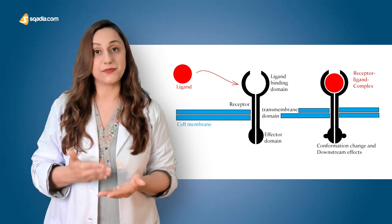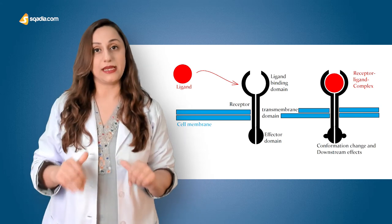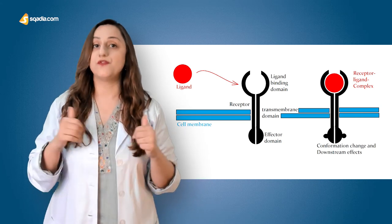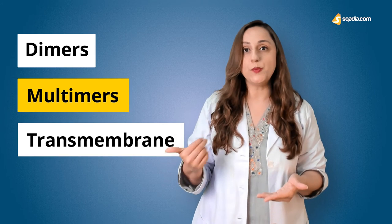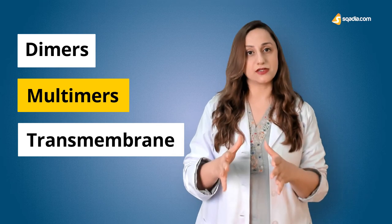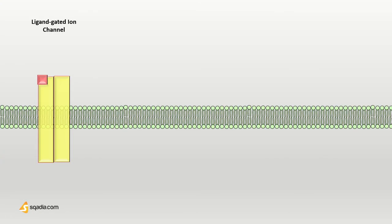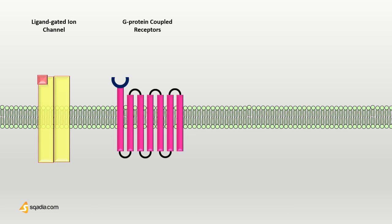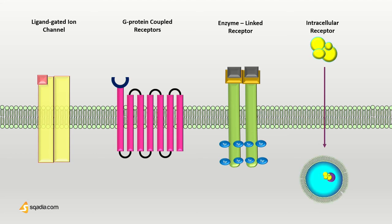Focusing in on the receptors of these ligands, there are multiple different types of receptors in the body, depending on their function and structure. These could be dimers, multimers, or transmembranes looping through the membrane multiple times. According to these factors, we usually divide them into four main types: ligand-gated ion channels, G-protein-coupled receptors, enzyme-linked receptors, and intracellular receptors, which could be cytoplasmic or nuclear receptors.